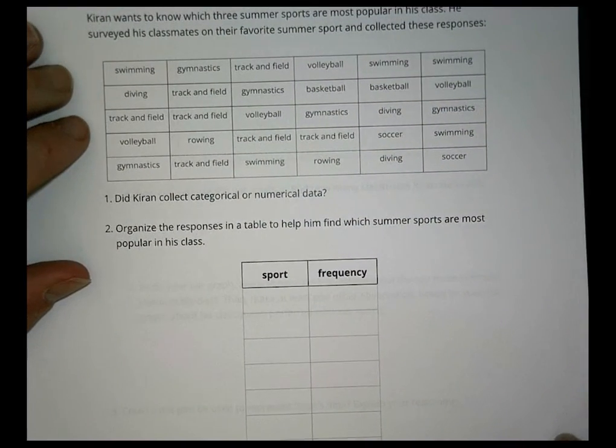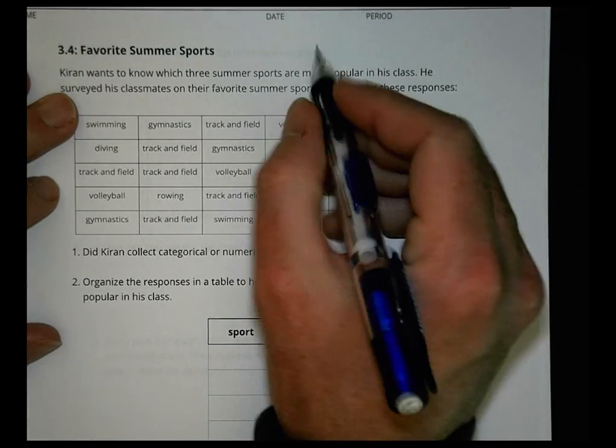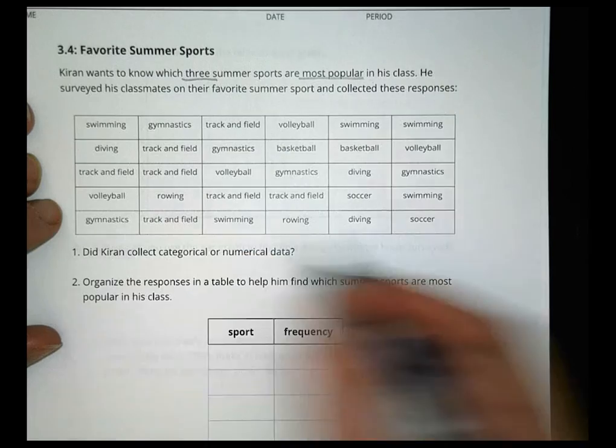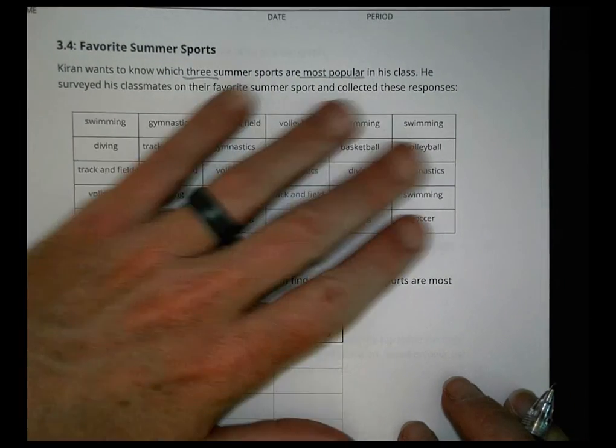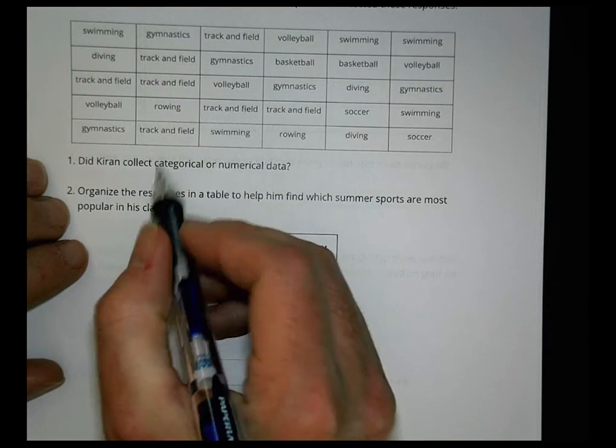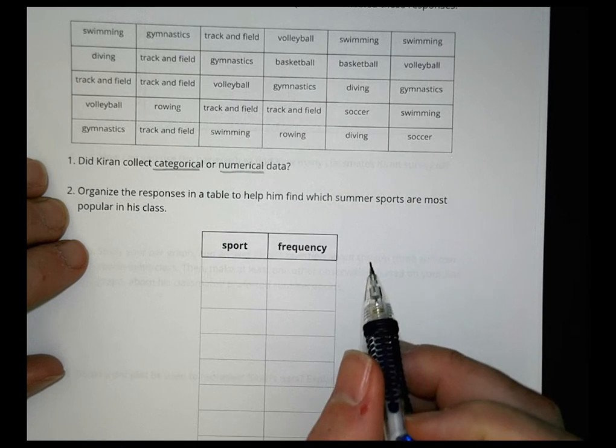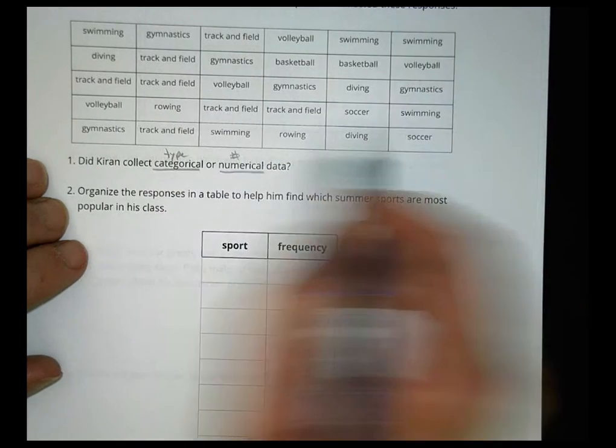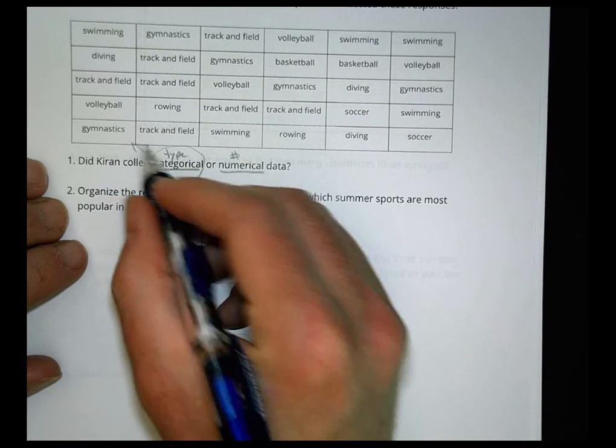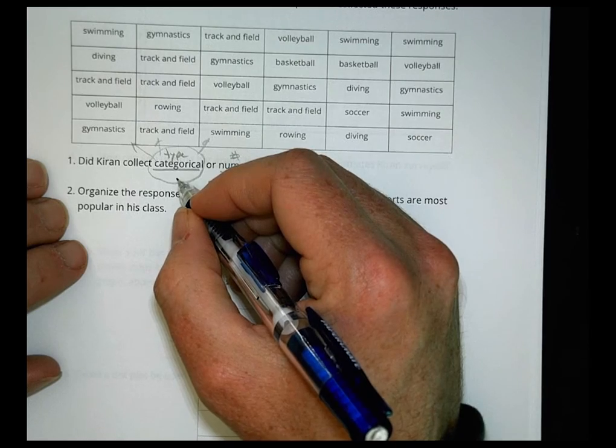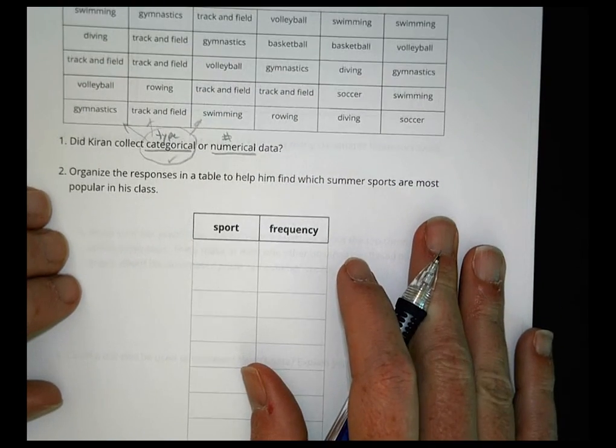Let's take a look at activity number four. Kieran wants to know which three summer sports are the most popular in his class. He surveyed his classmates on their favorite summer sports and collected all these responses. Now, this information here is not very well organized, is it? So we want to put the information in a different order so we can talk about it and compare it. First of all, is he collecting categorical or numerical data? Categorical is type, and numerical are numbers that we can compare and work with. In this case here, we see a lot of different types. So we're going to go with categorical because we have all these different groups of things that he's looking at. We can count them and that gives you a number, but we're really talking about the different types that people like.